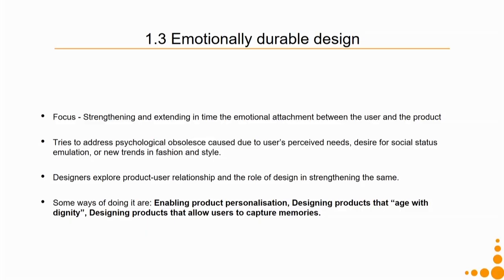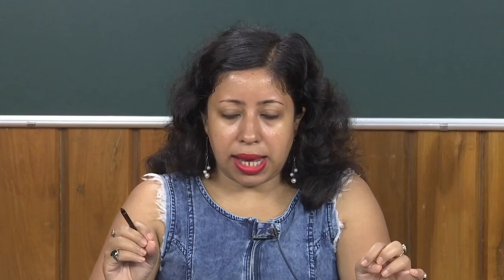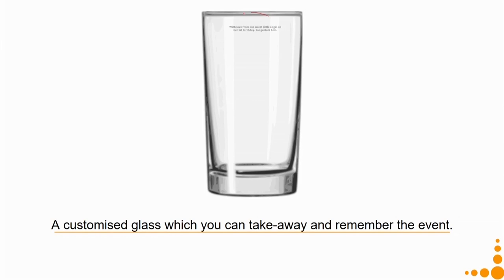Emotionally durable design aims to get people attached to a product, elongating its life through personalization or designing products that age with dignity. For example, at a birthday party you could give guests a glass with something etched on it—like 'with love from our sweet angel on her first birthday'—or even provide a small etching machine so guests can personalize their glass and carry it home as a memory.